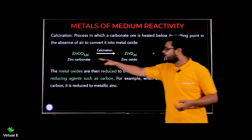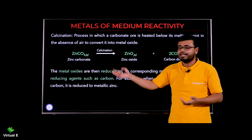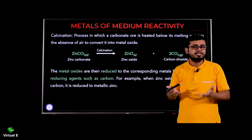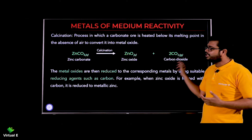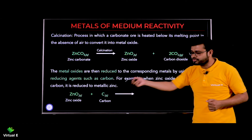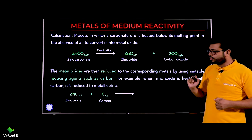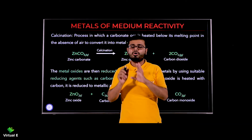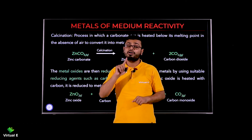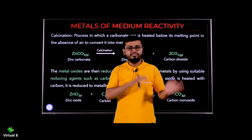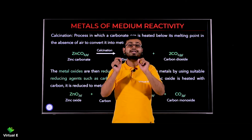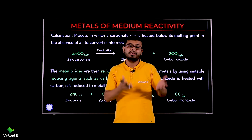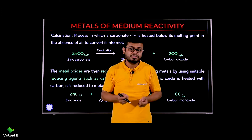To summarize: if you have a carbonate ore, do calcination; if you have a sulfide ore, do roasting. But in both cases, the end product is zinc oxide. After that, the process is the same — take carbon as the reducing agent, remove the oxygen, and you get zinc metal. Zinc oxide plus carbon gives zinc plus carbon monoxide.